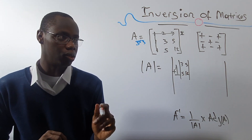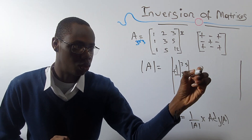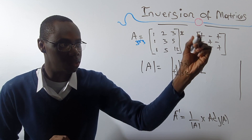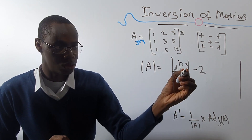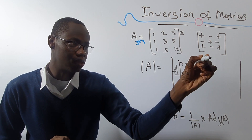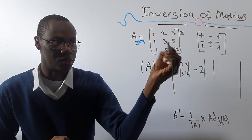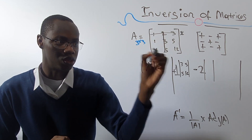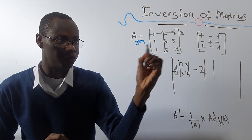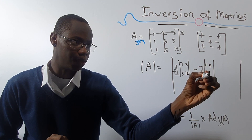Now let's move to the second element, which is 2. But what is the sign? That's the reason I need this sign pattern — so it's minus 2. To find the minor, delete the row and column associated. That leaves 1, 5, 1, and 12. Now for the last element, which is 3, the sign is plus again, so plus 3. The minor is 1, 3, 1, 5.